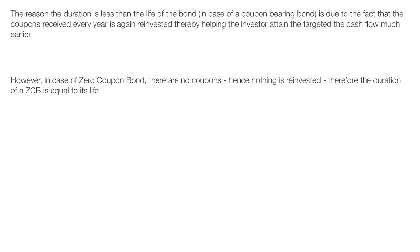In conclusion, we have learned three things. First, duration represents the time the investor needs to hold the bond to achieve his targeted cash flows. Second, the duration of a coupon-bearing bond will always be less than its life. And third, the duration of a zero-coupon bond will always be equal to its life. I hope you found this useful and easy to understand. In my forthcoming video clips, I will explain the concept of modified duration. Thank you.